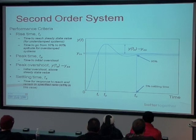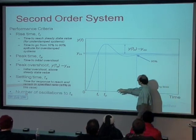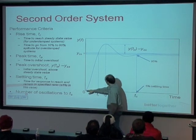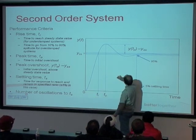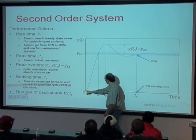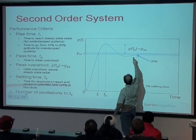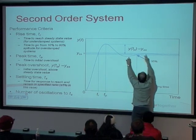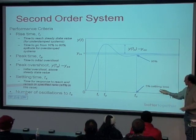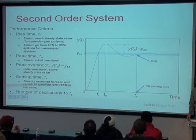The last performance criterion is the number of oscillations before you reach the settling time. If you imagine this is the trough of a sinusoid, then you reach a peak, and then there's another trough — that's one oscillation from trough to trough. In this case we've got just over one oscillation before reaching the settling time T_S.